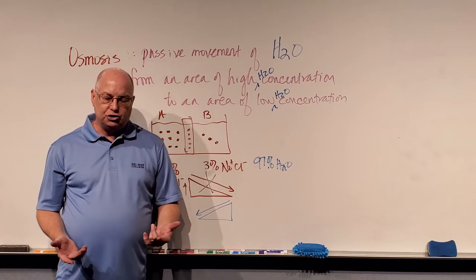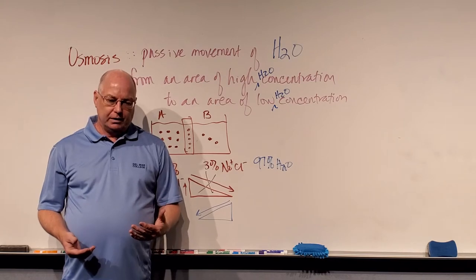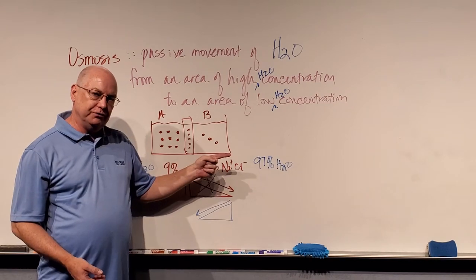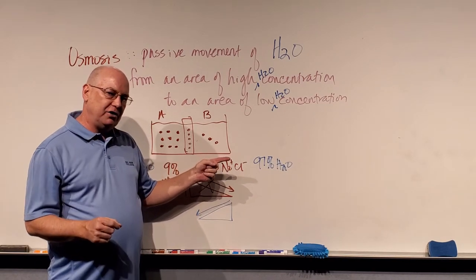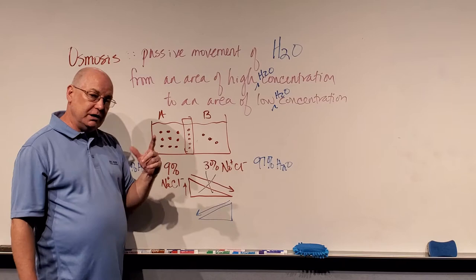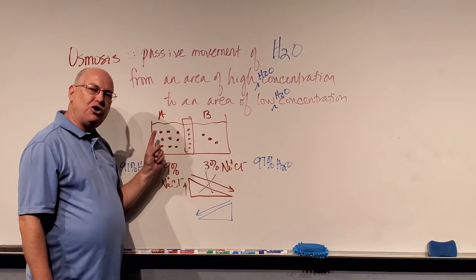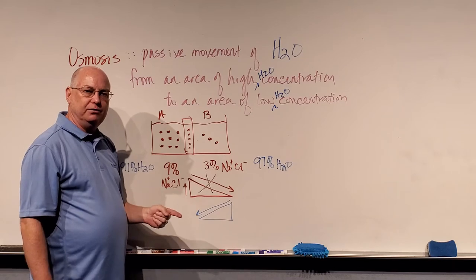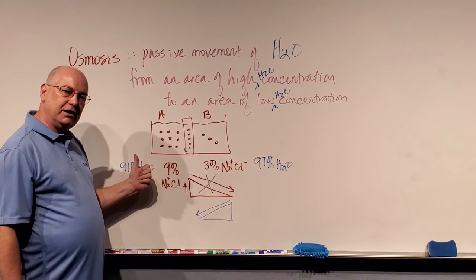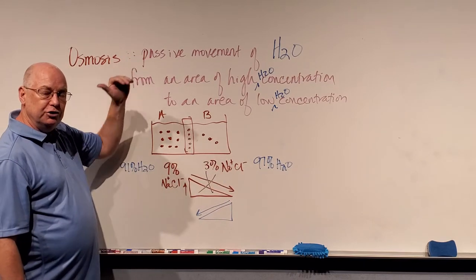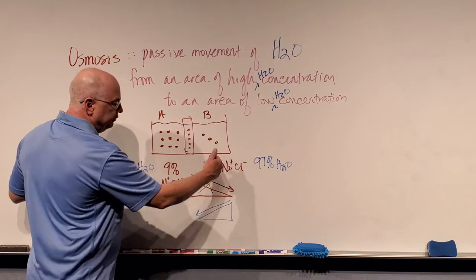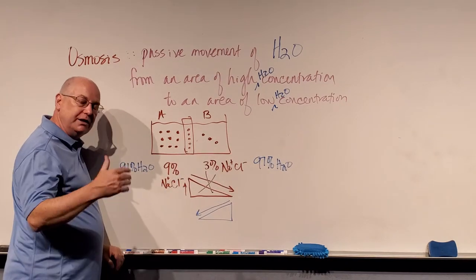How do you keep all this straight? Think of it this way: if diffusion can occur, it will, and we can predict the direction — high to low. If diffusion cannot occur, osmosis usually will, in the opposite direction. So if you understand diffusion, you understand osmosis. The only difference is osmosis is specifically the movement of water, and water will move in the opposite direction that diffusion would have occurred.